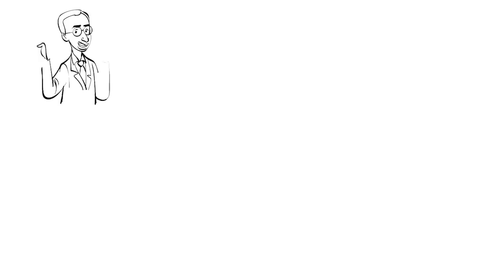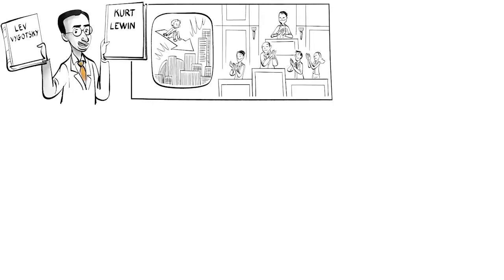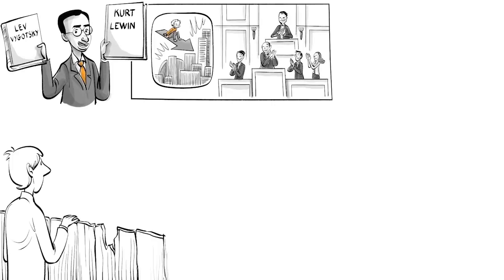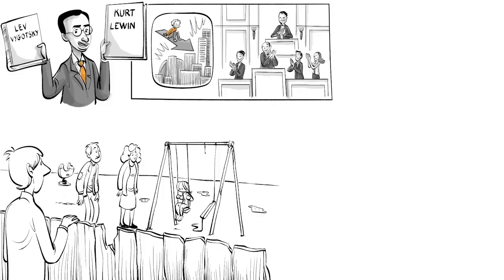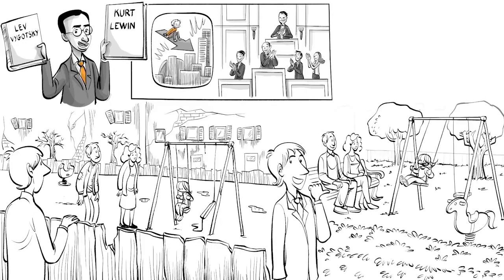Bronfenbrenner, who was influenced by Lev Vygotsky and Kurt Lewin, convinced the US Congress that a child's prospect is not genetically predestined, but is the result of the larger environment they happen to be placed in. Children who grow up in unfortunate social structures, therefore, need a form of support that not only reaches their families, but also elements of their community.